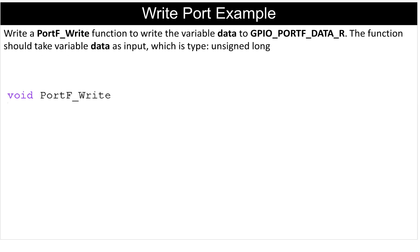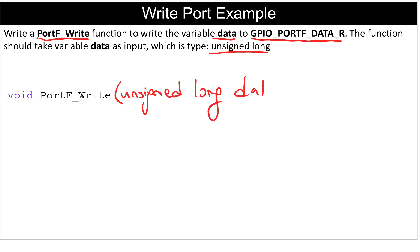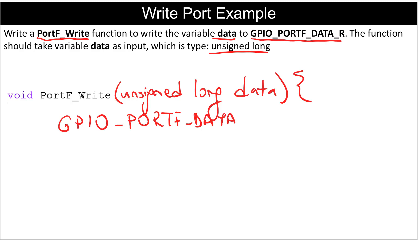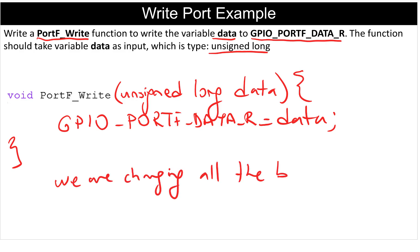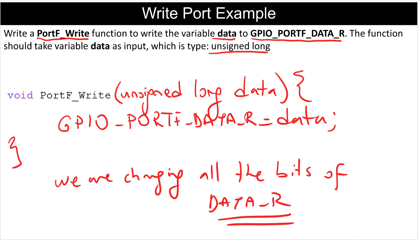For the write function, the function name is Port F Write. We need to write the variable data to the GPIO Port F data register, where data is of type unsigned long. To write it, we simply say GPIO Port F data register equals data. However, one thing to notice here is that in this case we are changing all the bits of the data register, which in many cases we don't want to do.